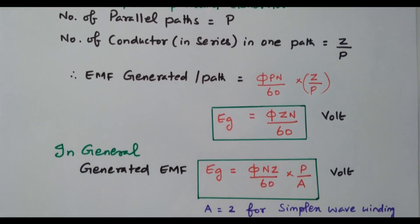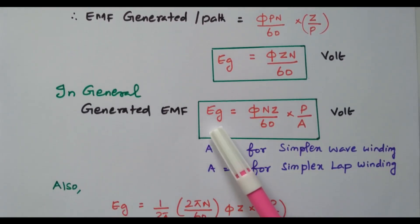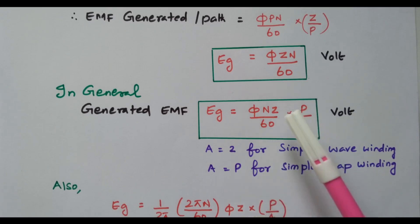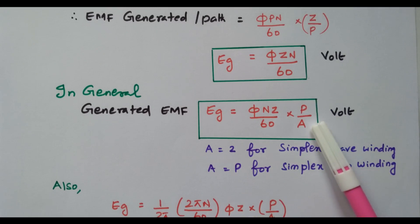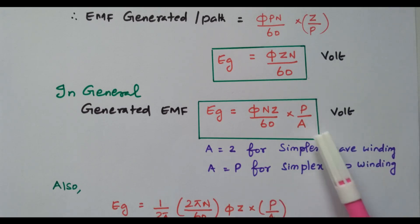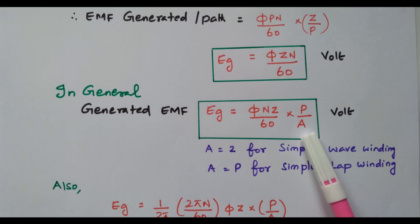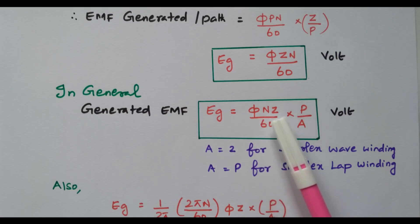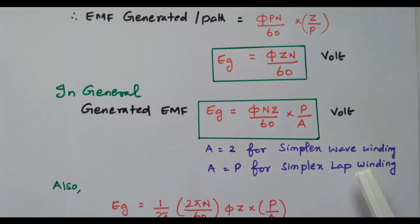In general, for either lap winding or wave winding, one equation is available: EG = φNZ/60 × P/A volts. Here A is the number of parallel paths. For simplex wave winding, A equals 2; for lap winding, A equals P (number of poles). This is the general equation for EMF generated, applicable for both lap winding and wave winding.